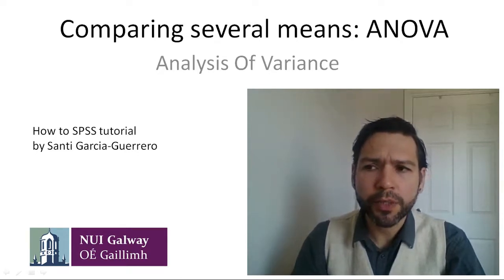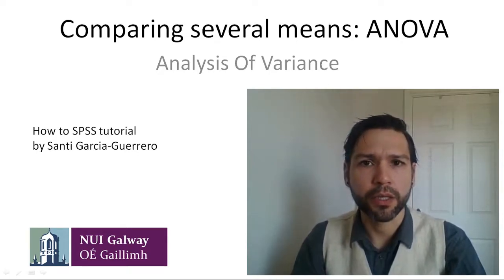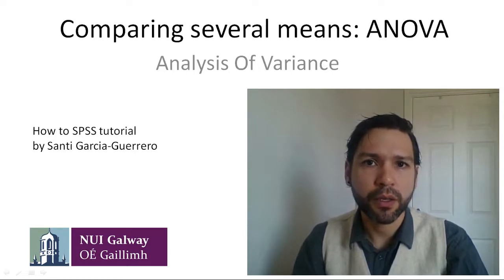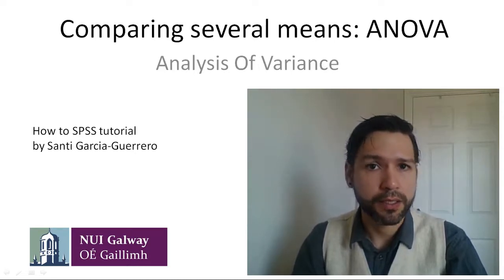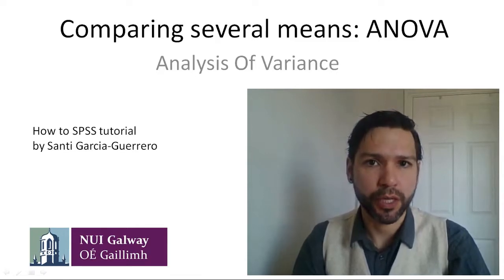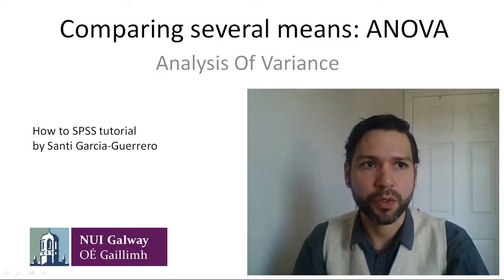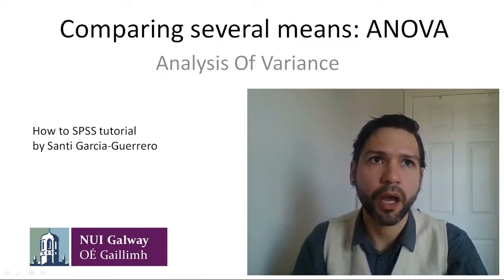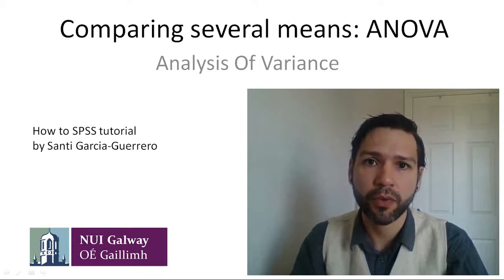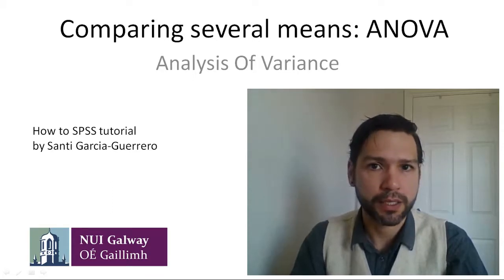Remember, a Type 1 error is rejecting the null hypothesis — which states there is no experimental effect — when in reality we should not reject it. In other words, we're claiming that our experimental manipulation has been effective when it hasn't.